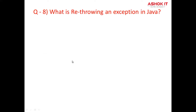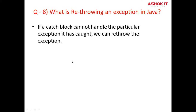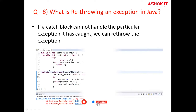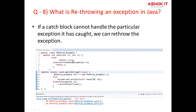Question number eight: What is re-throwing an exception in Java? An exception can be re-thrown in a catch block. This action will cause the exception to be passed to the calling method. If the re-throw operation occurs in the main method, then the exception is passed to the JVM and displayed on the console. The purpose of the re-throw option is to get the attention of the outside world that an exception has occurred. The re-throw expression causes the originally thrown object to be re-thrown. In this example, we are re-throwing the exception in the main method.